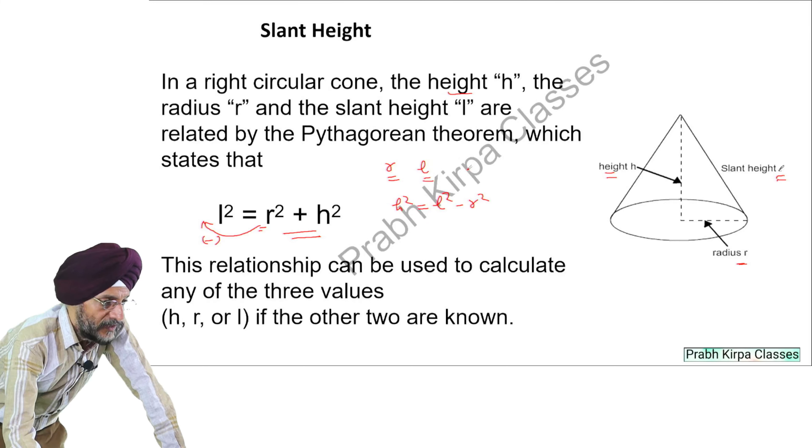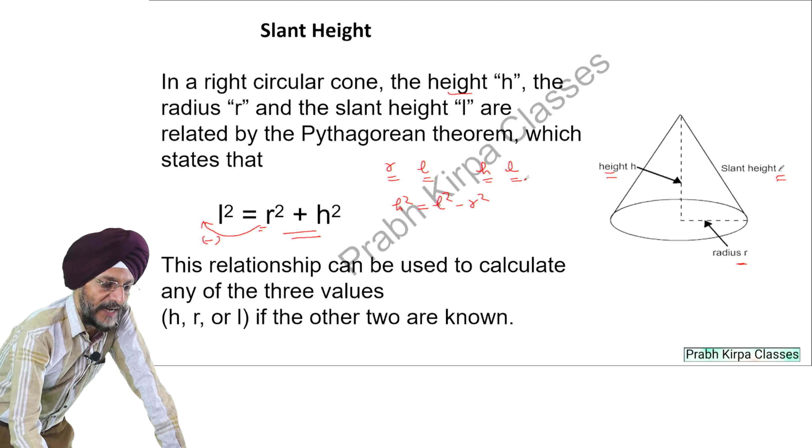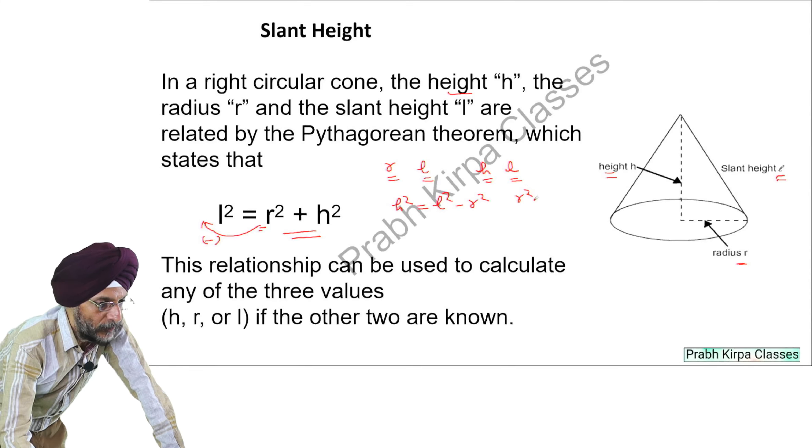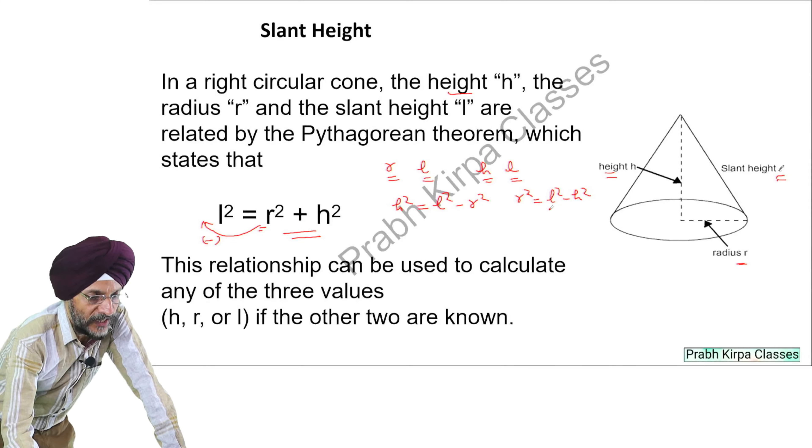If suppose we have been given the value of H as well as L, that is the height and slant height, then we can calculate the value of R. How can we calculate? R² is equal to L² - H², that is radius square equals slant height square minus height square.